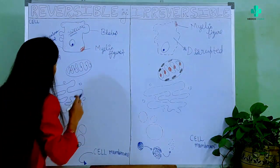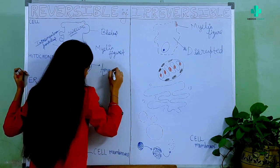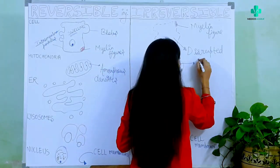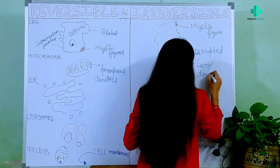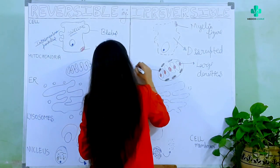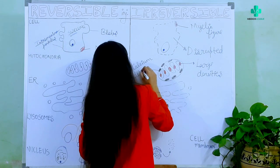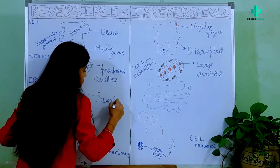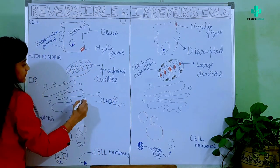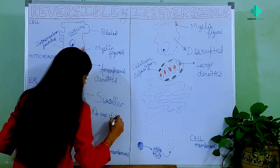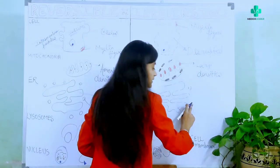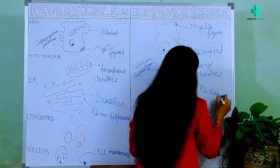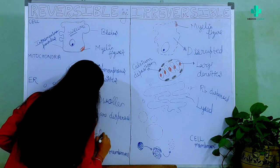Then comes the mitochondria. In reversible cell injury, mitochondria show amorphous densities, but in irreversible cell injury there are large densities, and we can also see calcium deposition. The endoplasmic reticulum is swollen and ribosomes are dispersed in reversible injury, while in irreversible injury the ER is first swollen and then gets disrupted, with ribosomes also dispersed.